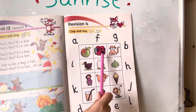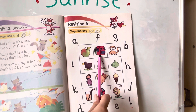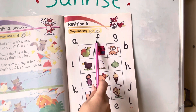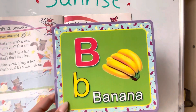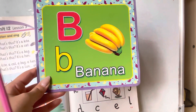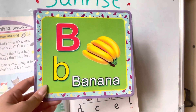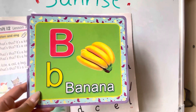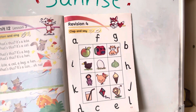Then here we have a bag. Bag starts with the letter B. Here we have letter B. This is uppercase B and this is lowercase B. Capital B and small b. B like banana. B like bag. Can you say B? Bag. Great.